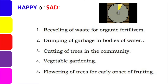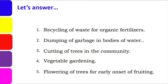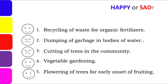While we are waiting, I would like to say that the PowerPoint I'm using will be available in the description box below so that teachers can download and use it in your own discussion. Now let's answer. The answers are: Happy face for number 1 — recycling of waste for organic fertilizer, because that is good; we recycle waste to become natural fertilizer. Sad face for number 2 — dumping of garbage in bodies of water. Sad face for number 3 — cutting of trees in the community. Happy face for number 4 — vegetable gardening. And happy face for number 5 — flowering of trees for early onset of fruiting, meaning the blossoming of flowers on trees signals that fruits are about to ripen.